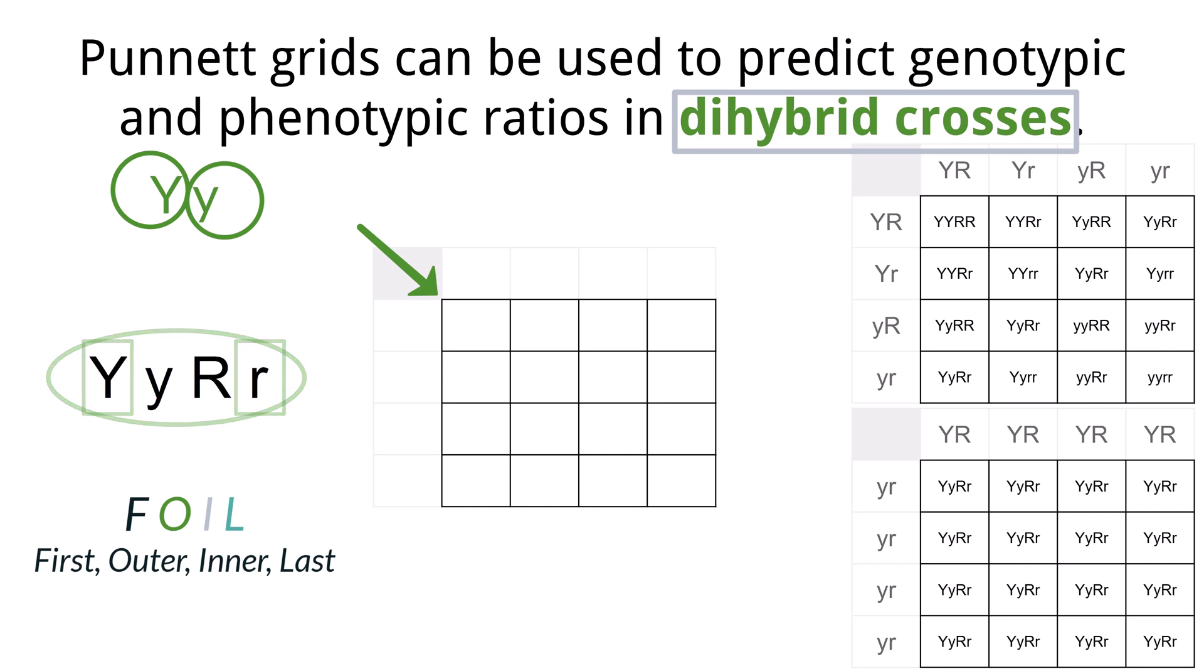This is where you would use the FOIL method. F is for the first. You would take the first letters of each trait and place those in one gamete: uppercase R, uppercase Y. Outer refers to the first and last letters: uppercase R, lowercase y. Inner refers to the two middle letters: lowercase r, uppercase Y. And last is the last letters of each trait: lowercase r, lowercase y. This would give you four eggs.